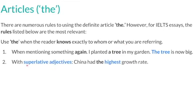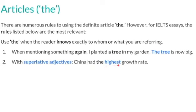We also use 'the' with superlative adjectives. Superlative adjectives are basically words like highest, lowest, best, worst, fastest, quickest, slowest, and so on. We'll talk more about superlative adjectives when we get to the vocabulary section of this course. Here's our example: 'China had the highest growth rate.' Notice that because we have a superlative adjective here — 'highest' — we have to use 'the'.